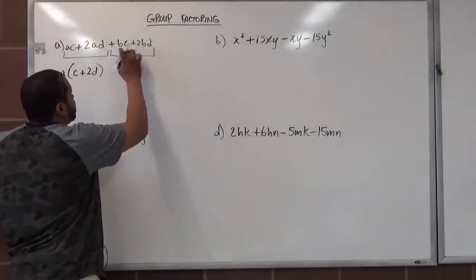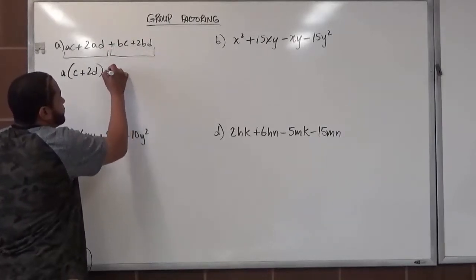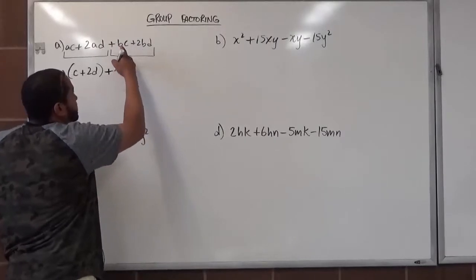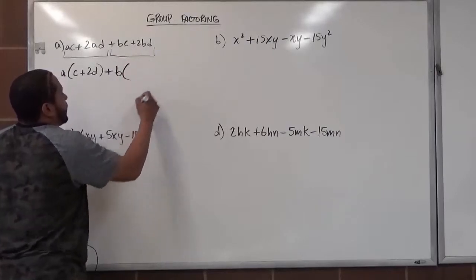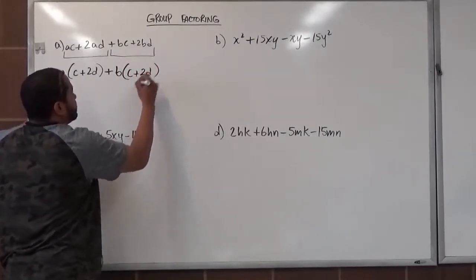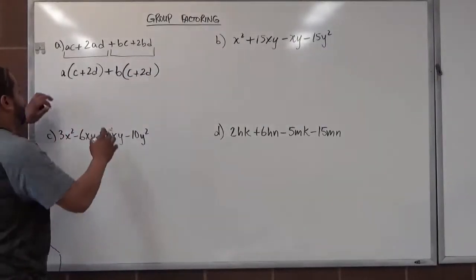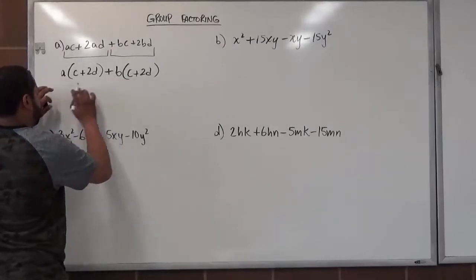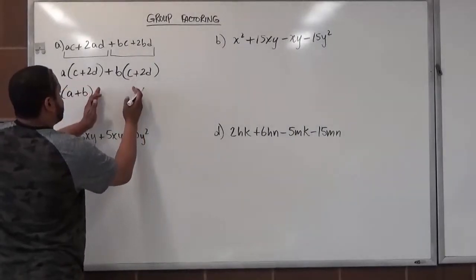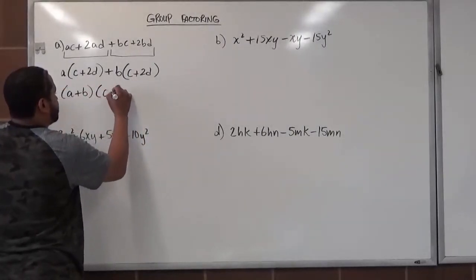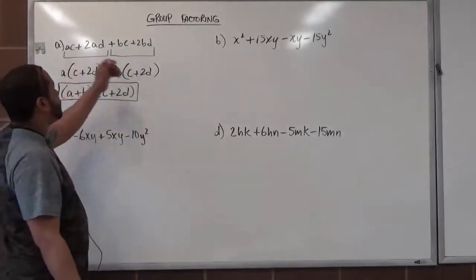When we factor out our second set, we take notice that the third term is a positive, so we're going to factor out the positive symbol first. The greatest common factor between BC and 2BD is just B. What we have left over is just C plus 2D. Now we see that we have C plus 2D on both sides, which makes it easy to do the last step. We take the leading terms and put them in their own set of parentheses, and take the common term and put it in one set of parentheses right next to it. And we've just completed the group factor method for all four terms.